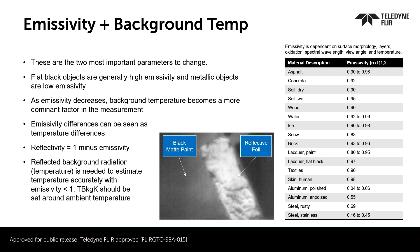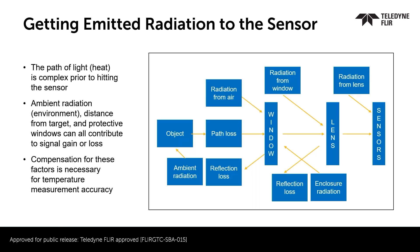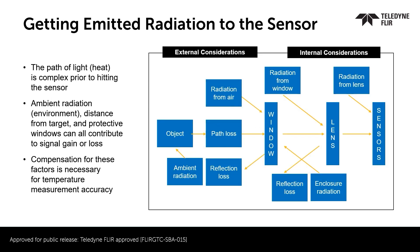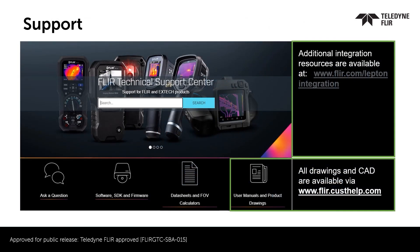The Lepton default emissivity is set equal to 1, so it's best to adjust emissivity using the table shown here. There are external environmental and internal system considerations that impact radiometric accuracy. In addition to the factors introduced in this presentation, it may be useful to explore the thermography training available at the Infrared Training Center. For further questions or support, please go to FLIR.CUSTHELP.COM to connect with our support agents as well as our applications engineers. Additional integration resources can be found at FLIR.COM/LeptonIntegration.